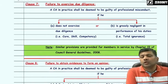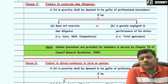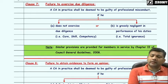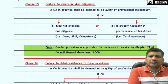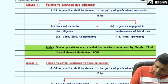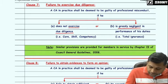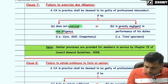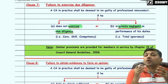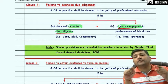Moving to Clause 7. Clause 7 states that if a practicing CA fails to exercise due diligence in performance of his duties, or he is grossly negligent in performance of his duties, he will be guilty of professional misconduct. A CA in practice shall be deemed to be guilty of professional misconduct if he does not exercise due diligence or is grossly negligent in performance of his duties.